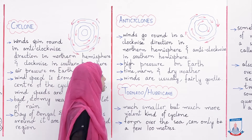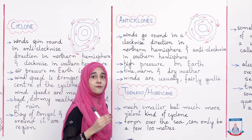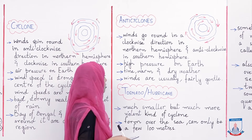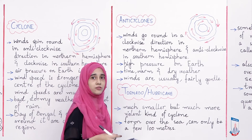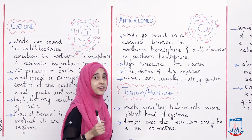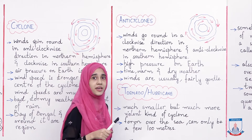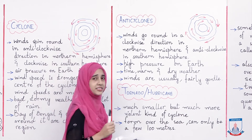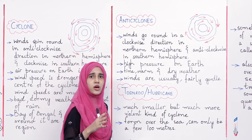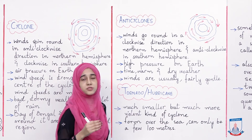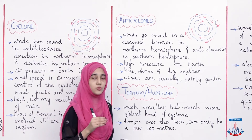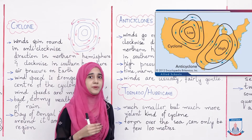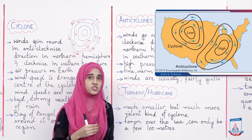In an anti-cyclone, there is high pressure on Earth — uska Earth pe jo pressure hota hai, woh zyada hota hai, jab ke cyclone mein Earth pe pressure kam tha. The weather during an anti-cyclone is fine, warm and dry — jab ke cyclone mein the weather is stormy and bad with rain. Winds are usually fairly gentle, thoda aaram se chalti rehti hai. Bacho, aap chahein toh cyclone aur anti-cyclone ka ek table bana sakte hain to understand the differences, aur aapki screen pe jo image nazar aa rahi hai usse bhi aapko zyada acche tareeqe se samajh aayega.